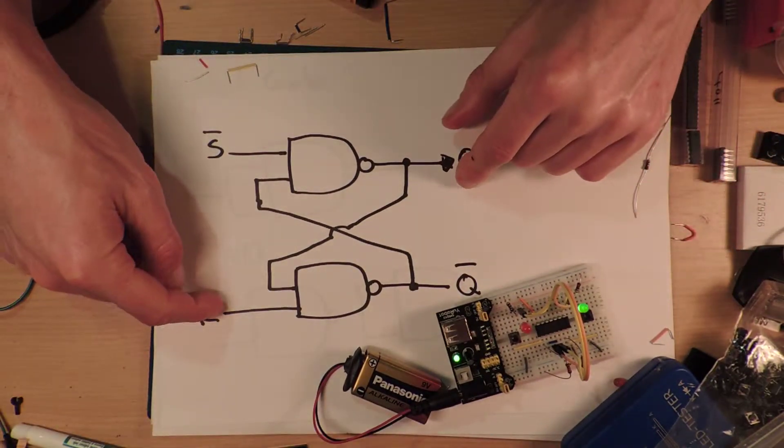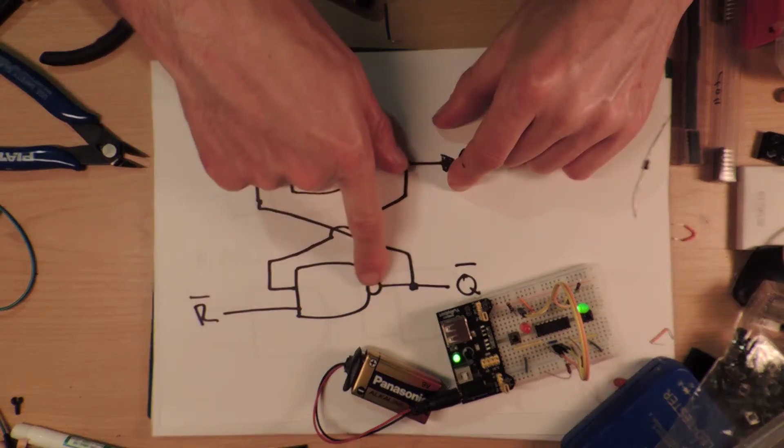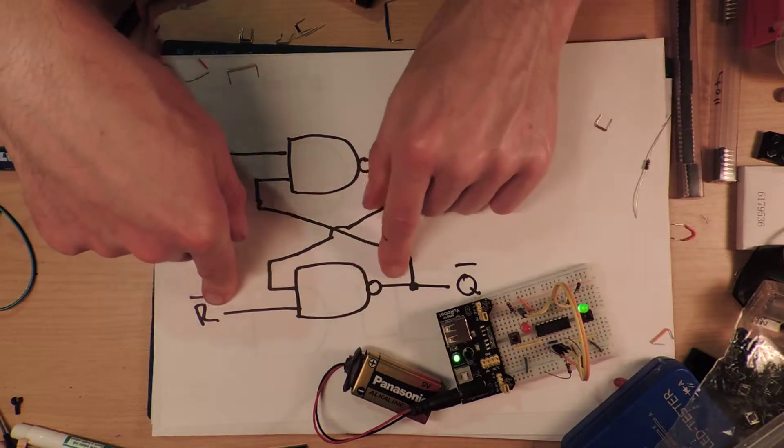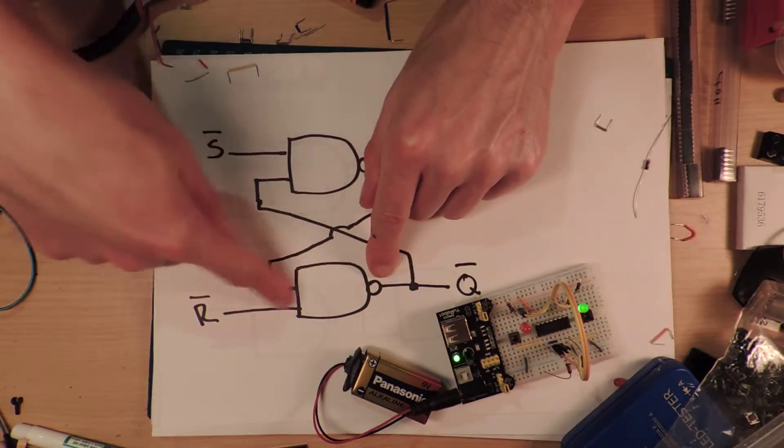So if this is low, then this definitely has to have a high output. So it's a NAND gate. If either one of these things inputs are low, the output is always going to be high. It doesn't matter what the other one is.